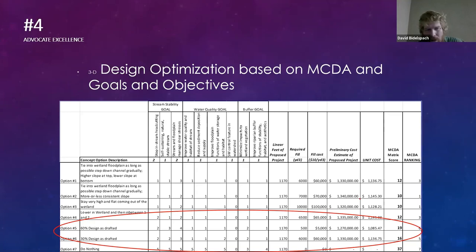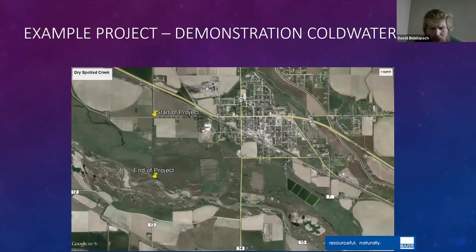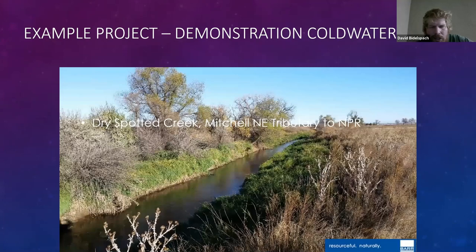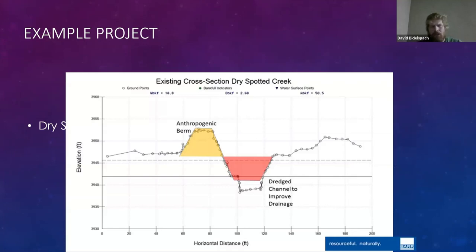These numbers aren't as quantified as you might think because they're very qualitative, but they give us a frame of reference to say this option is more or less optimal than another. Our project is on Dry Spot Tail Creek — about a half mile of stream. It is a linear ditch in the panhandle of Nebraska, about a half hour from the Wyoming line near Scottsbluff.